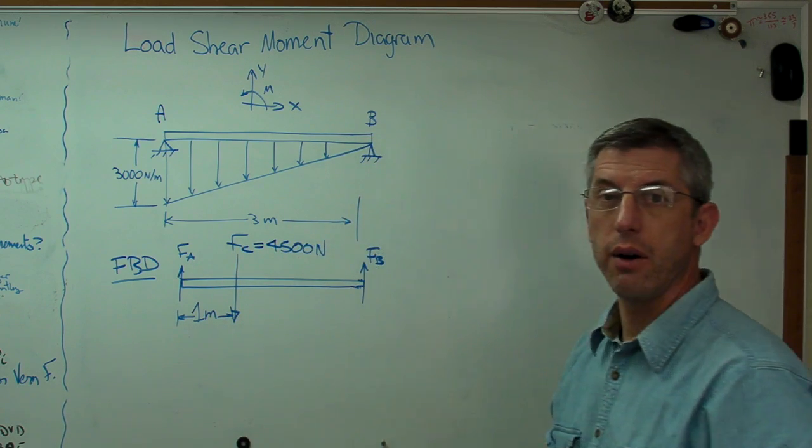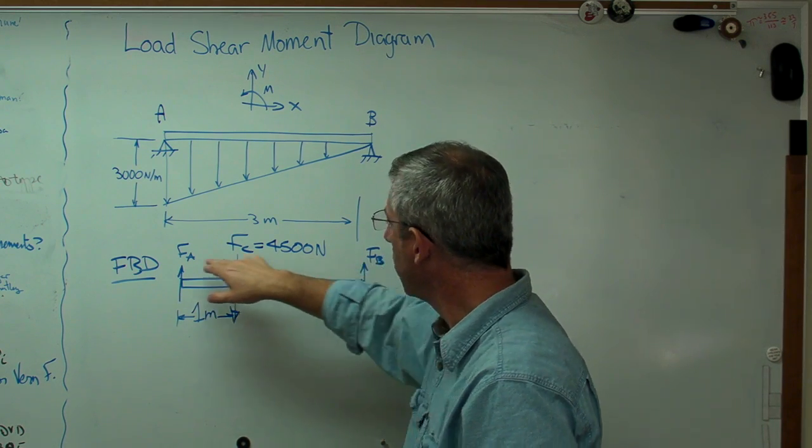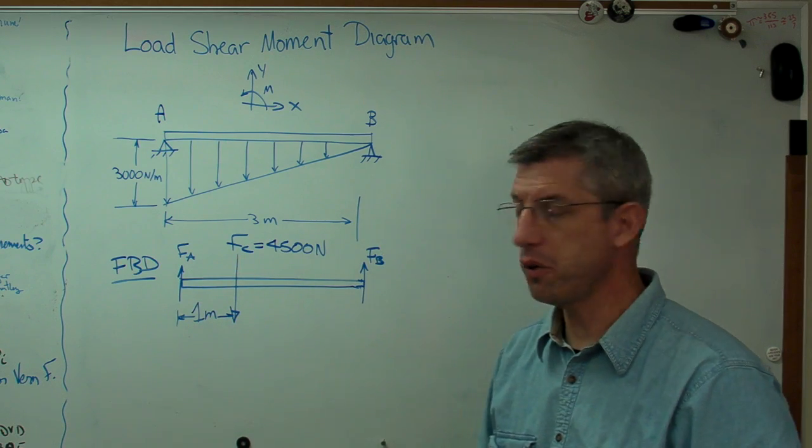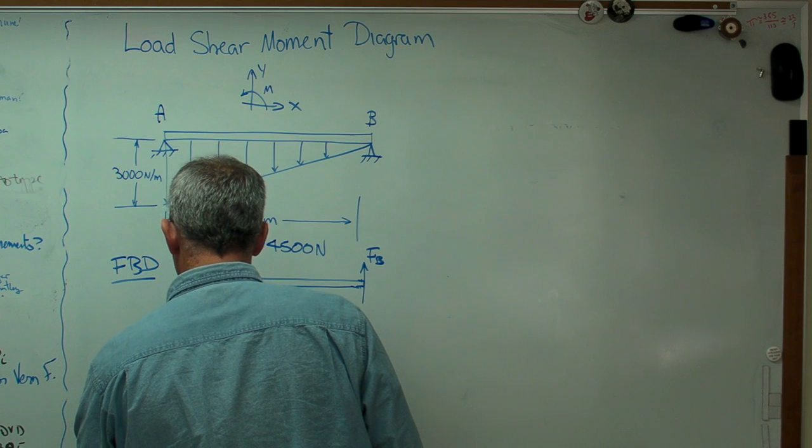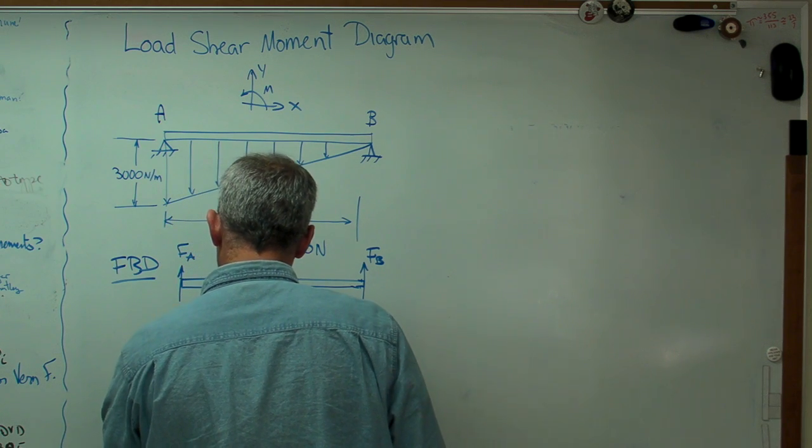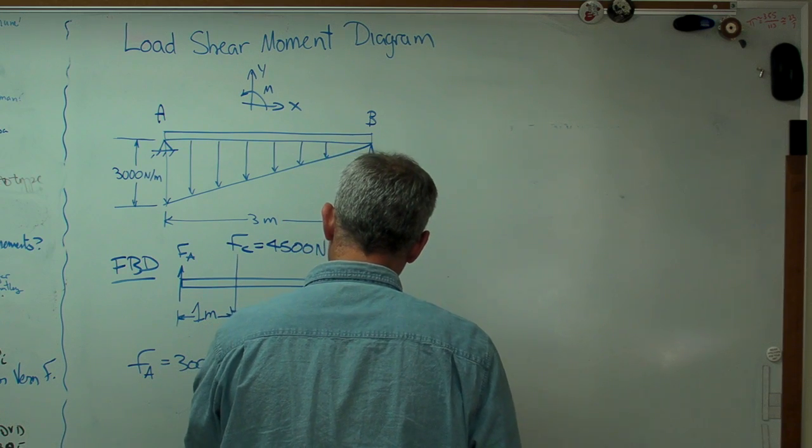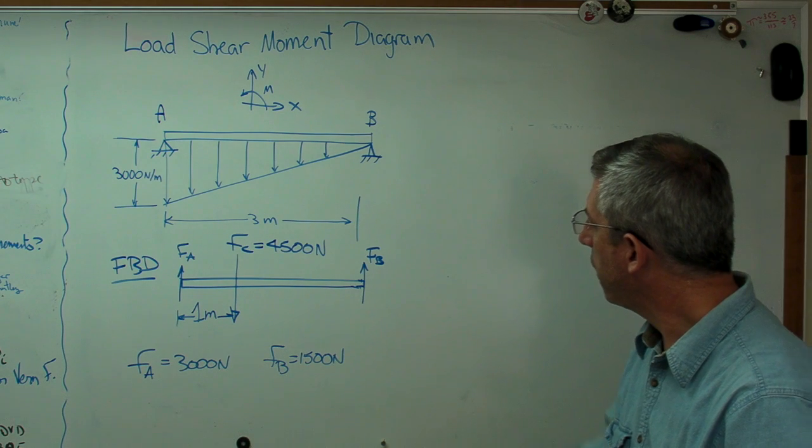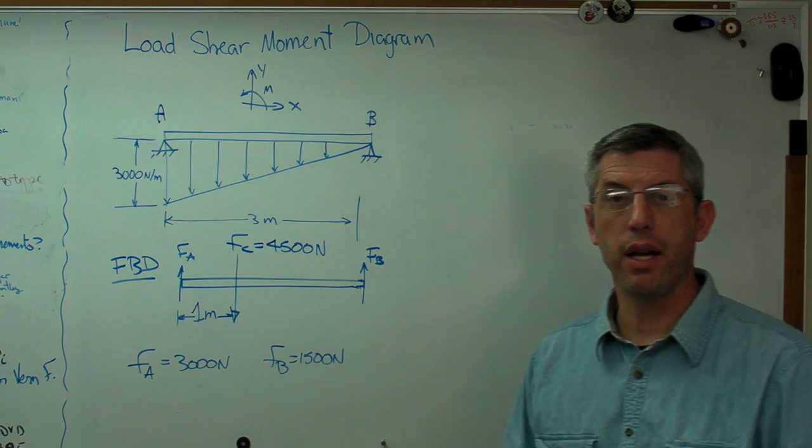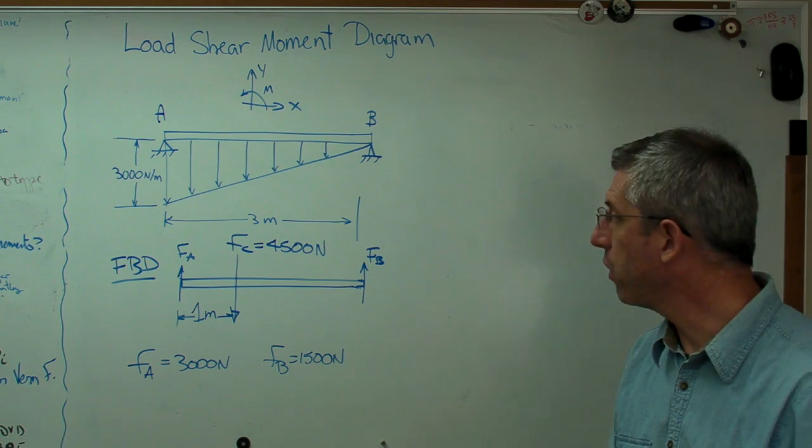Now, I want to keep this video short. If you sum the vertical forces and then sum the moments about one of those points, either A or B, you're going to find out that FA equals 3,000 newtons and FB equals 1,500 newtons. At that point, we're ready to go ahead and write out an expression that describes the load all across the beam.